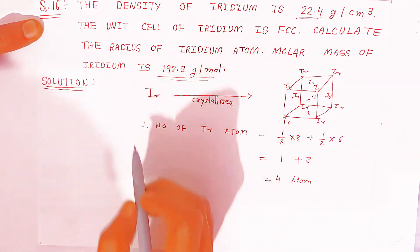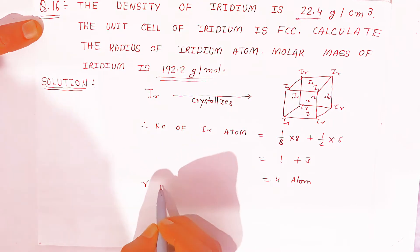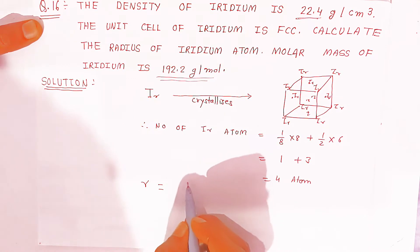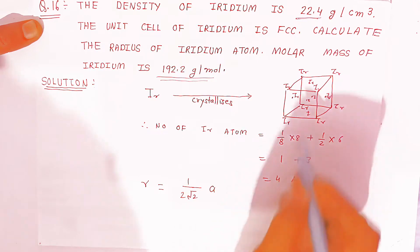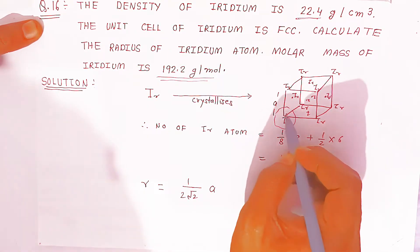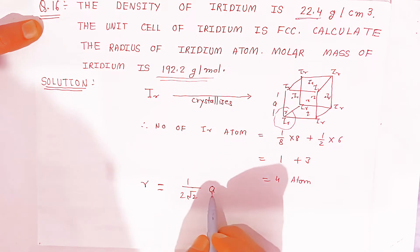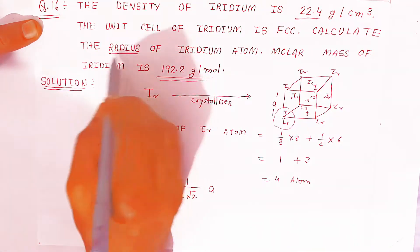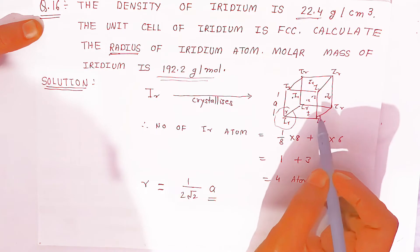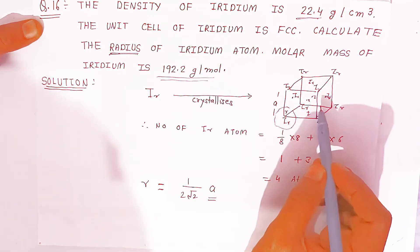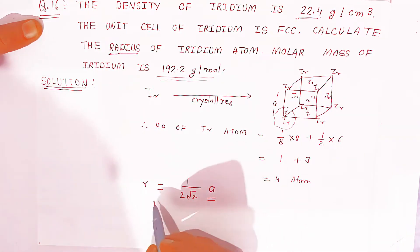Now we have to find the radius of the iridium atom. The radius is always equal to a / (2√2), where 'a' is the side of the unit cell. If you want to calculate the radius, you need the side 'a'. The volume is equal to a³, so once you calculate 'a', you can find the radius.